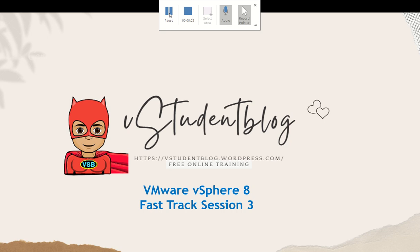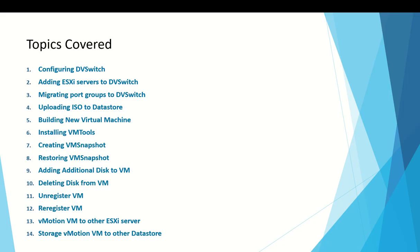Welcome to the student blog in the VMware vSphere 8 fast track course series. This is session 3 and today's topics include: configuring a DV switch, adding ESXi hosts to the DV switch, migrating port groups, uploading an ISO to a datastore, building a virtual machine, installing VM tools, creating and restoring VM snapshots, adding and deleting disks, unregistering/re-registering a VM, performing vMotion, and storage vMotion.